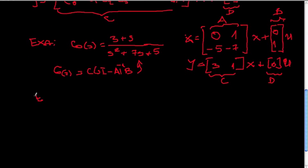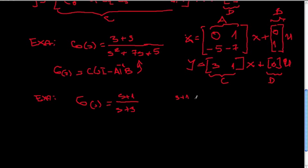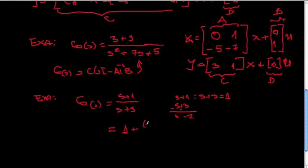What about a proper transfer function? Consider G(s) = (s + 1) / (s + 3). No problem — we divide the two polynomials: (s + 1) divided by (s + 3). One times (s + 3) gives s + 3; subtracting from (s + 1) gives a remainder of −2. Therefore we can rewrite: G(s) = 1 + (−2) / (s + 3).